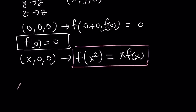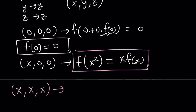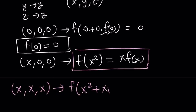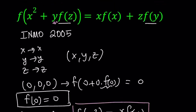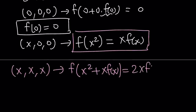Now I'm going to replace x with x, y with x, and z with x — so (x, x, x). From here, we get f of x squared plus x times f of x on the left-hand side. On the right-hand side, you have x times f of x plus x times f of x, which is just 2x times f of x. This is good because we have something for x times f of x, and we can use these two equations together.